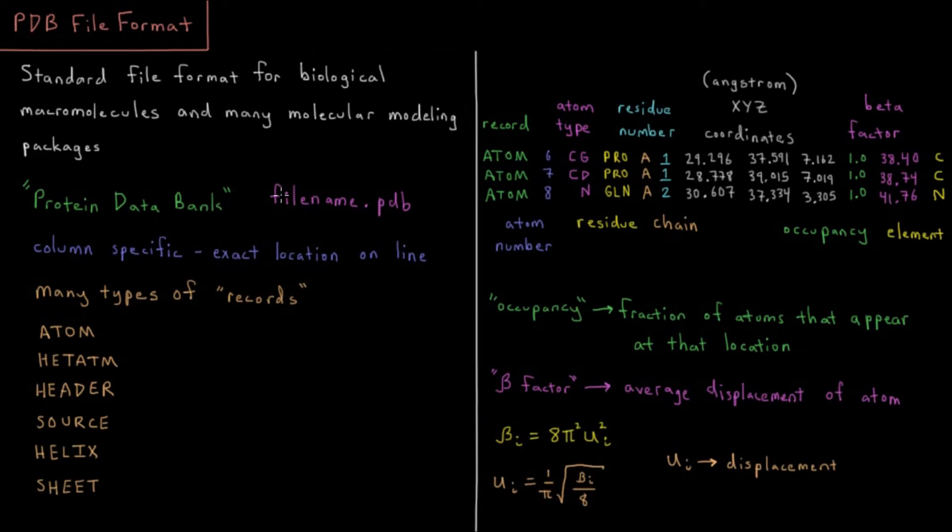One of the main differences between PDB and XYZ in a lot of cases is that for many of the PDB formats, they are what are called column specific. So all of these records have to fall in the exact column number in the line.